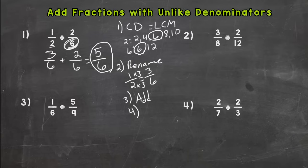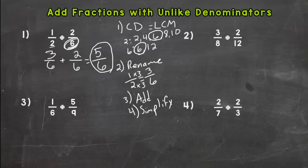Step four is to simplify your fraction — break it down as far as it can go. The only common factor between five and six is one, so five-sixths is already in simplest form. If you need help simplifying, I did an instructional video on that. None of the problems in this video need to be simplified, but it is a good skill to know.